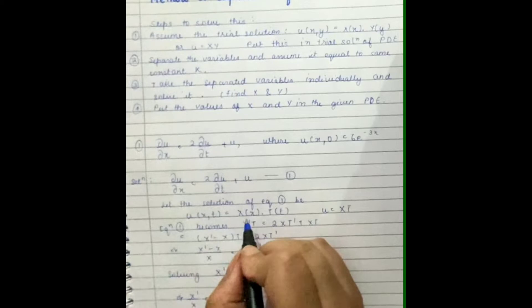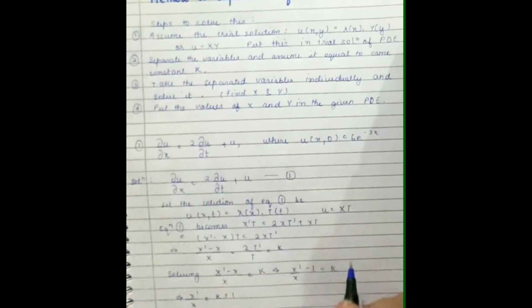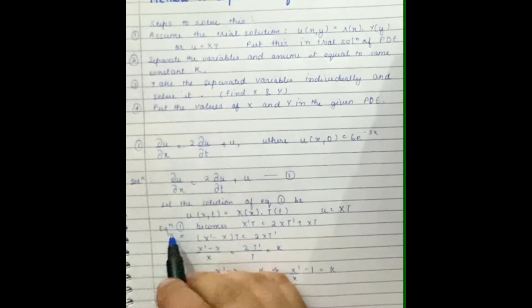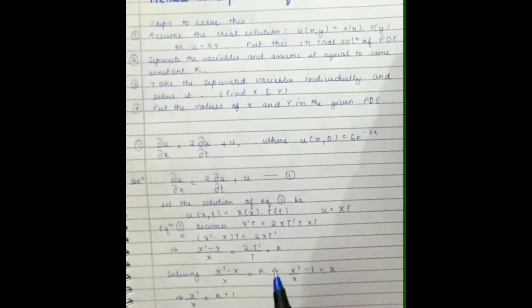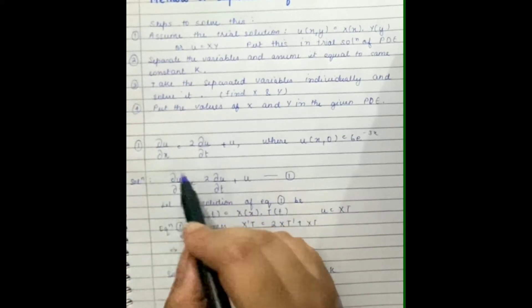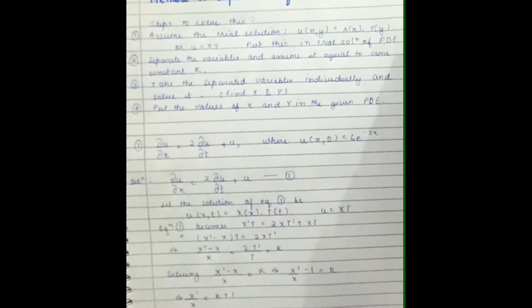So we have taken this as a solution of X(x) and T(t), or u = X·T. The equation becomes X'T = 2X·T' + XT, because we are partially differentiating this. Now by solving this we'll get the separated form.